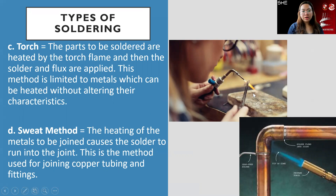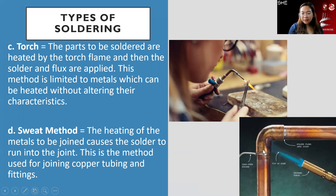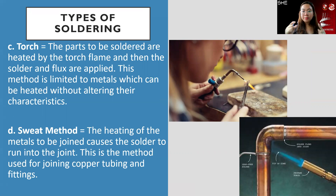The torch method involves heating parts to be soldered with a torch flame, then applying solder and flux. This method is limited to metals that can be heated without altering their properties. In this case, the actual metal itself is heated to melt and combine — no additional filler material is added. It is usually used for joining copper tubing and fittings, such as elbows and pipes.